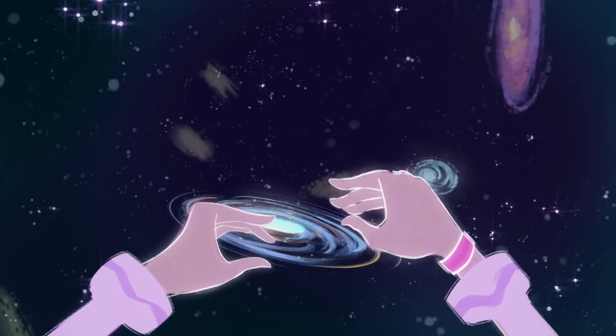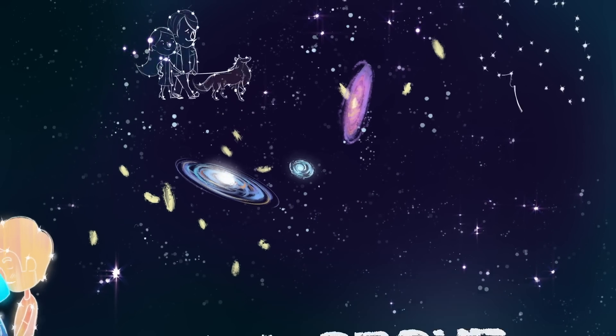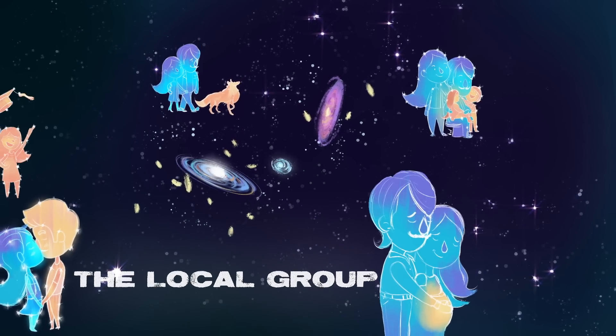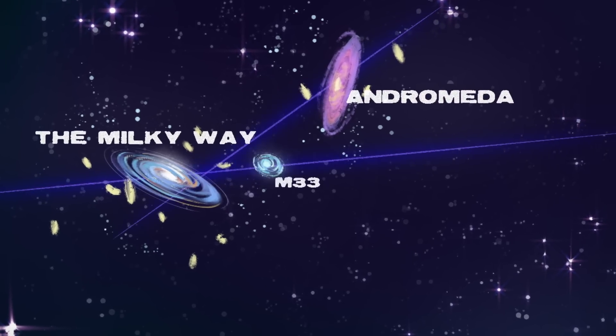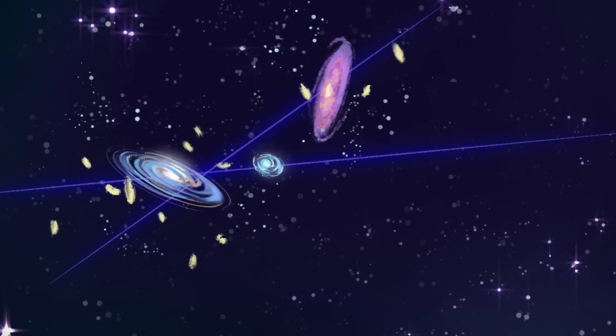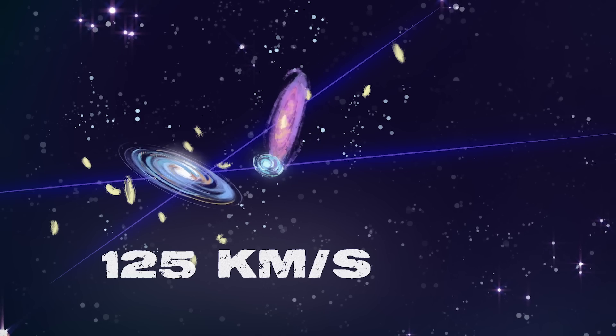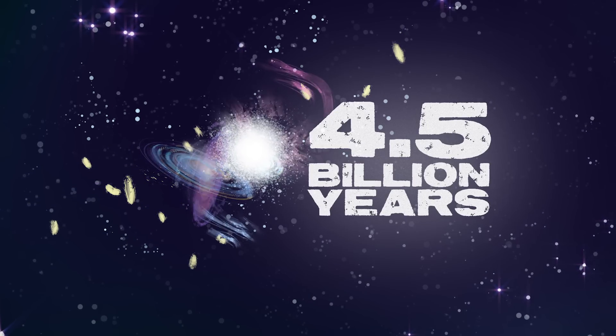Our galaxy and over 100 neighbors together constitute the local group. The Milky Way and Andromeda are hurtling towards each other at 125 kilometers per second and will collide in about 4.5 billion years.